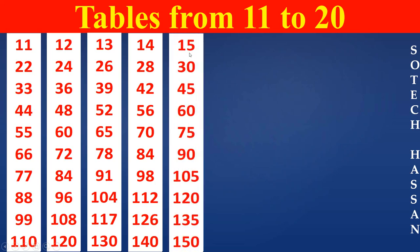15th table. 15 ones are 15. 15 twos are 30. 15 threes are 45. 15 fours are 60. 15 fives are 75.